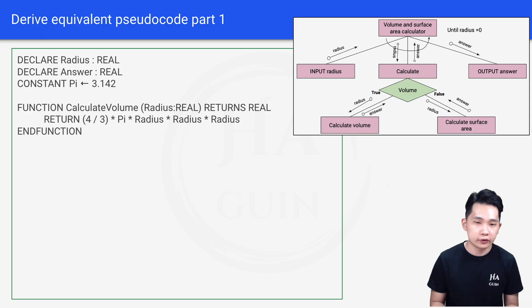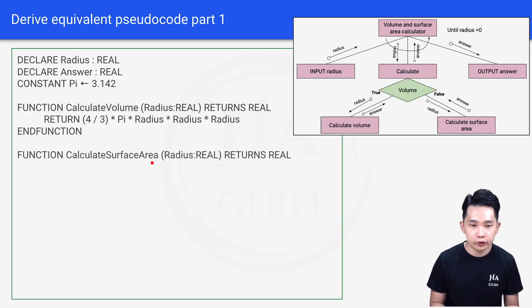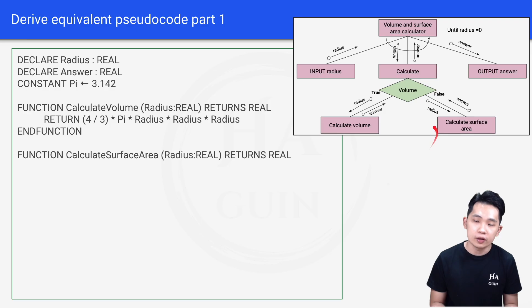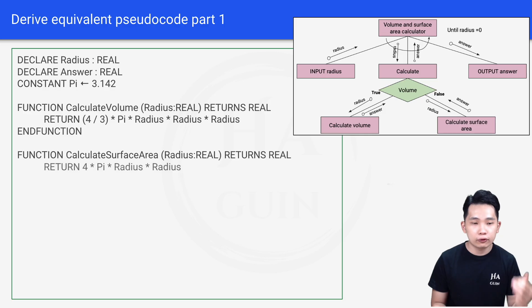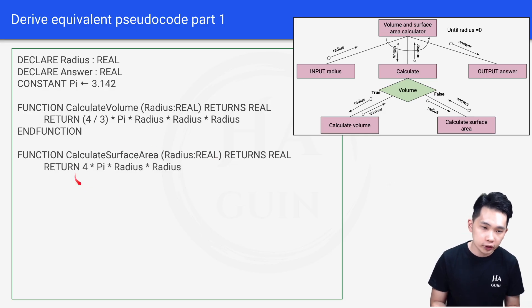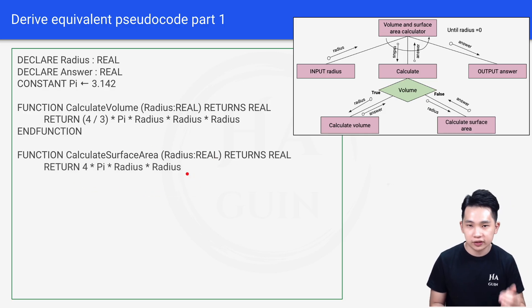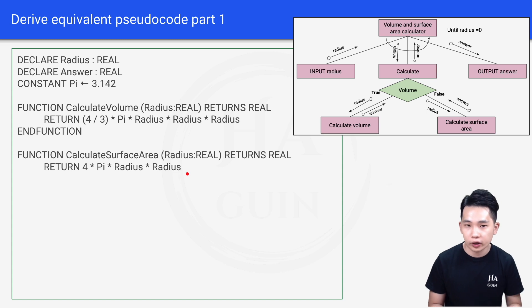Next, we calculate the surface area: FUNCTION calculateSurfaceArea(radius : REAL) RETURNS REAL. The input is radius and it returns a real number. Inside the function: RETURN 4 × pi × r × r. This is the formula for the surface area of a sphere — 4 pi r squared. Then we end the function.